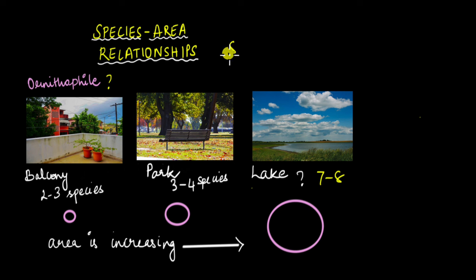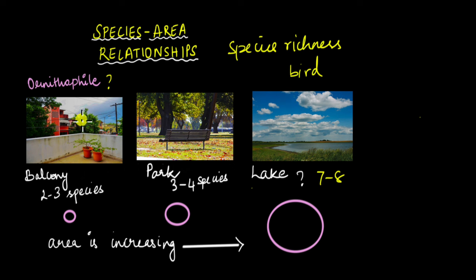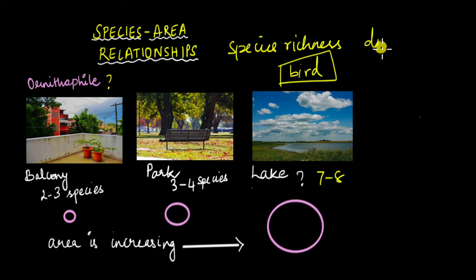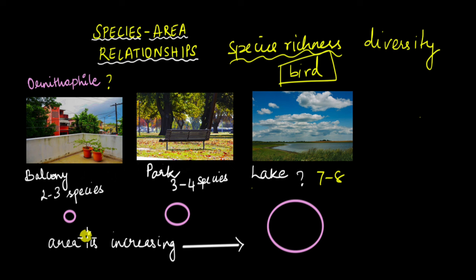Here we're going to talk about species richness, which means taking one type of organism — like a bird — and counting the number of species of that organism you can find in an area, then seeing how that number changes as you increase the area. That tells us the species richness. This is quite different from species diversity, which we discussed when talking about types of biodiversity. In this video we'll focus on species richness.